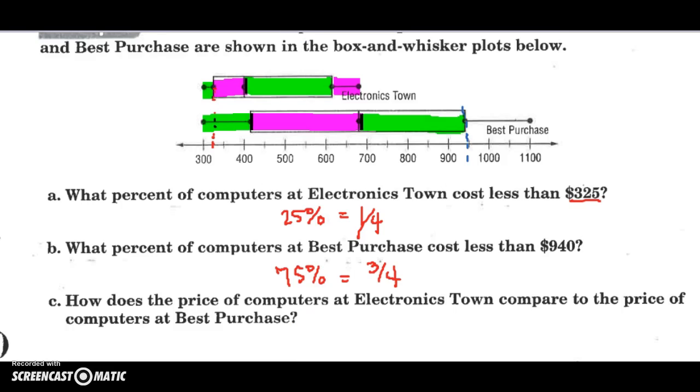All right, our last question asks us to compare. That's why they have the two box and whiskers side-by-side, so that we can do a comparison. How did the prices compare? Well, look, Electronic Town stops right here, and that is right at the median of Best Purchase.